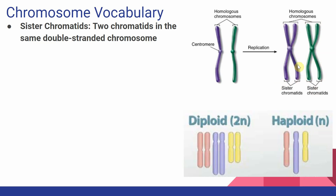This is just a term we use to talk about two chromatids within the same double-stranded chromosome. These two sister chromatids should be genetically identical to each other. We started off with single-stranded chromosomes — a single-stranded purple and a single-stranded green chromosome — and went through replication, making an exact copy of each so that sister chromatids have the same exact genetic information. Keep that in mind going forward.